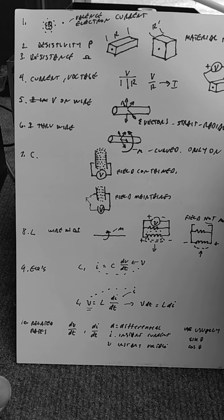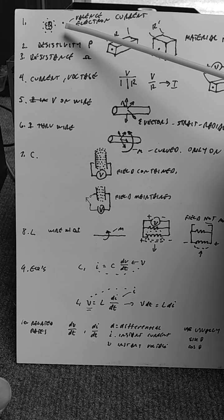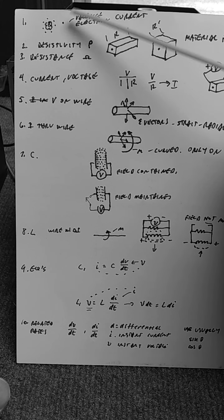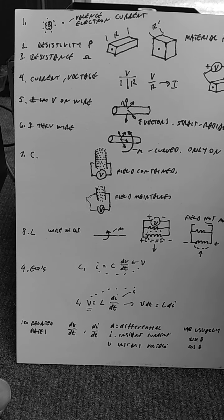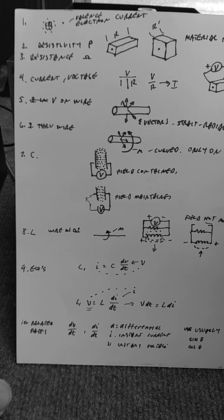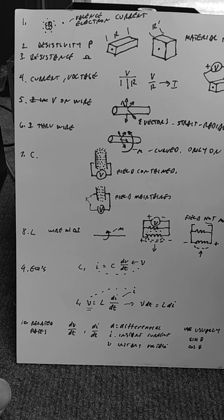Electrical current is a result of these valence electrons jumping or being pushed actually between atoms. The old analogy of a tube full of ping-pong balls is reasonably close.